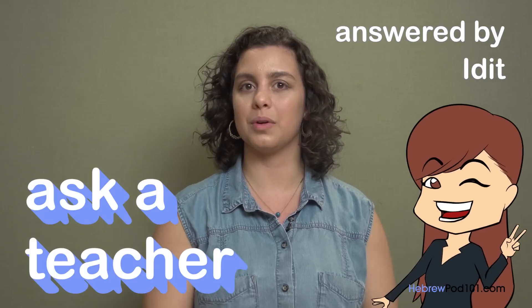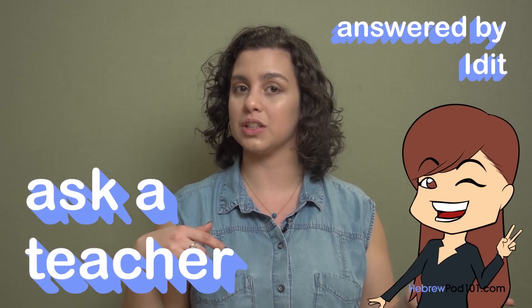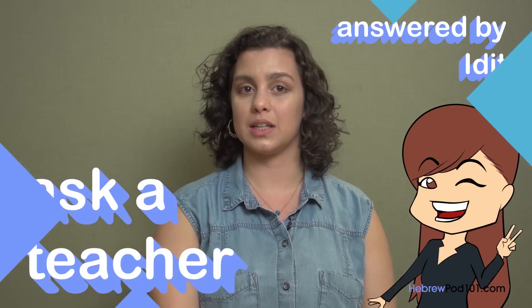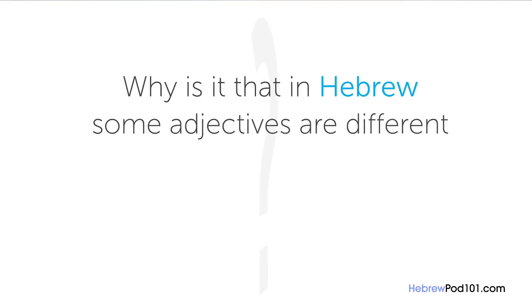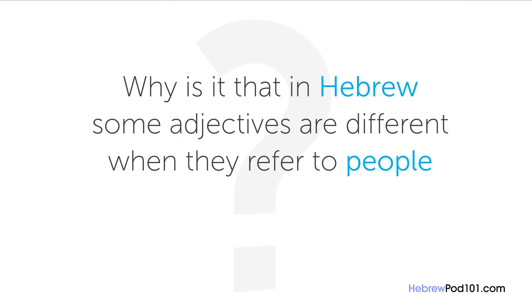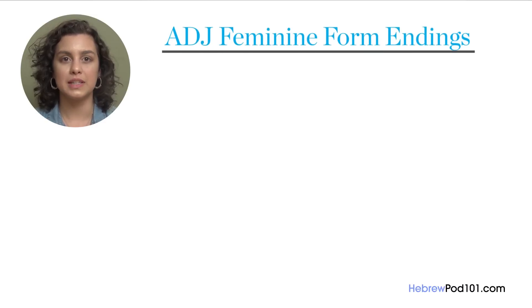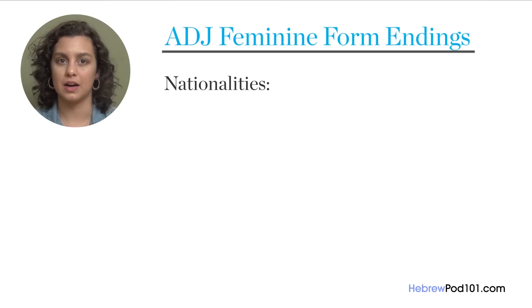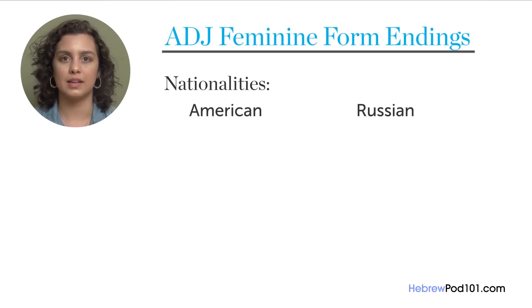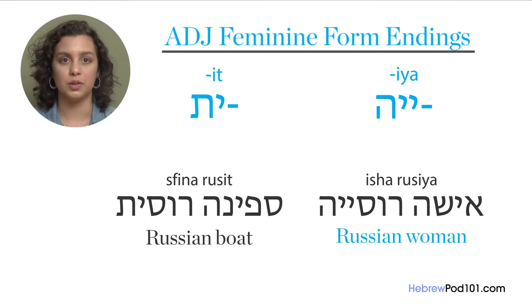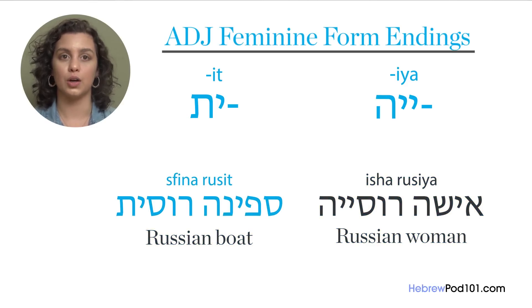Welcome to Ask a Teacher, where I'll answer some of your most common Hebrew questions. The question for this lesson is: why is it that in Hebrew, some adjectives are different when they refer to people than when they refer to objects? This issue involves adjectives in their feminine form, mostly adjectives for nationality like American or Russian. The difference is in the ending: either '-it' or '-ya.' For example, a Russian woman would be 'isha russiya,' but a Russian boat will be 'sfinah russit.'